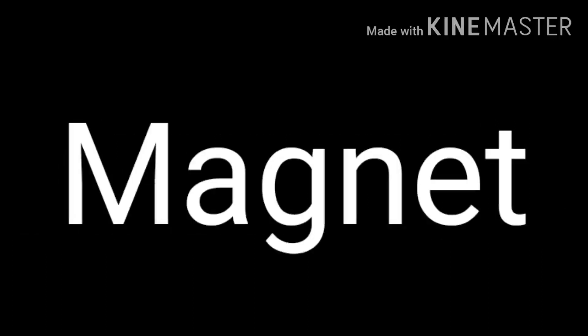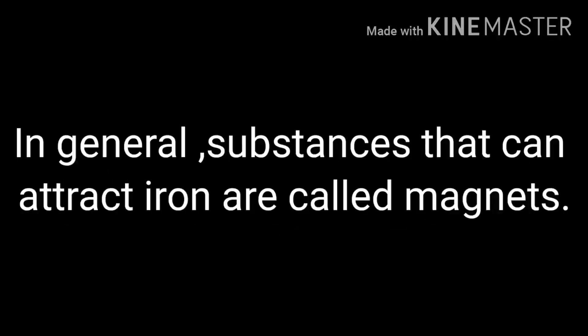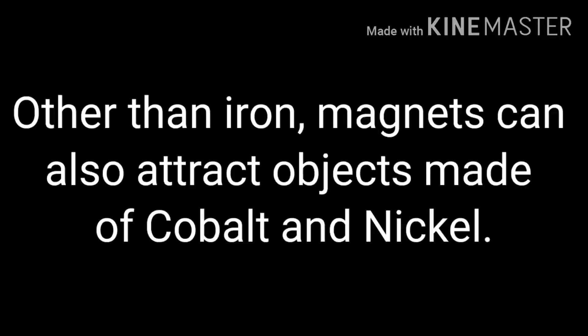Now we will discuss about magnets. Generally, substances that can attract iron are called magnets. But other than iron, magnets can also attract objects made up of cobalt and nickel. So we can say that magnets do not attract only iron, but they also attract cobalt and nickel.